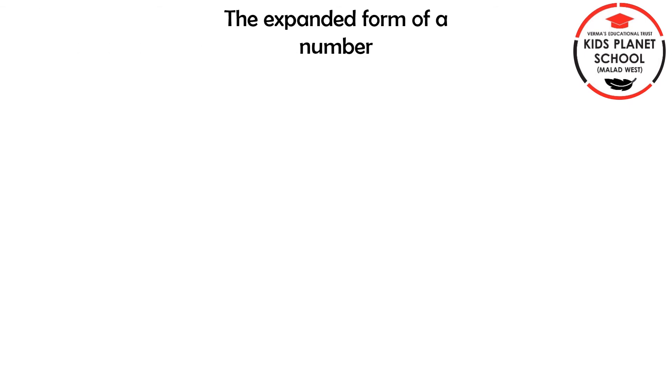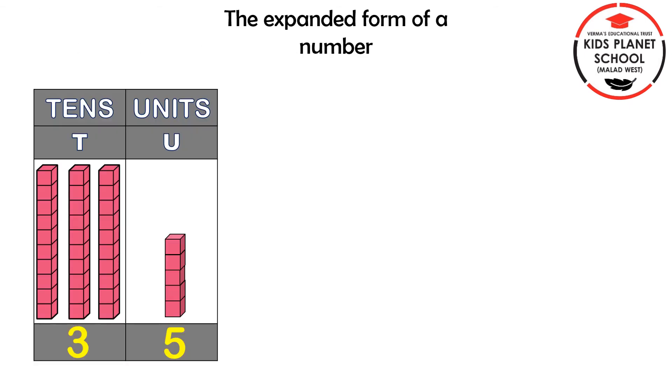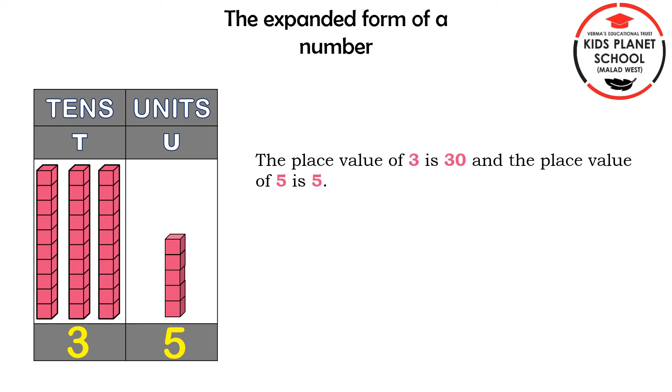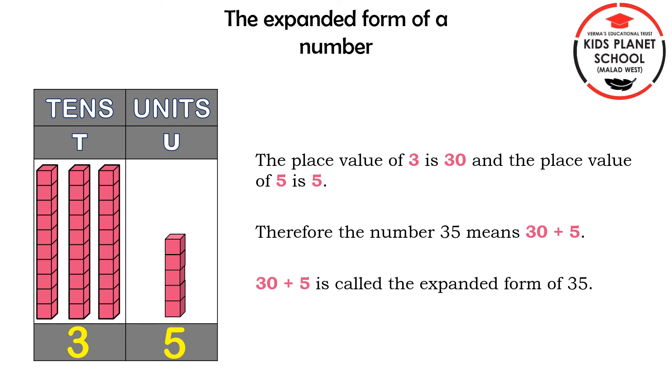Now we will study the topic: expanded form of a number. Children, see this example. In the number 35, there are 3 tens and 5 units. So the place value of 3 is 30, and the place value of 5 is 5. Therefore, the number 35 means 30 plus 5. Children, 30 plus 5 is called the expanded form of 35.